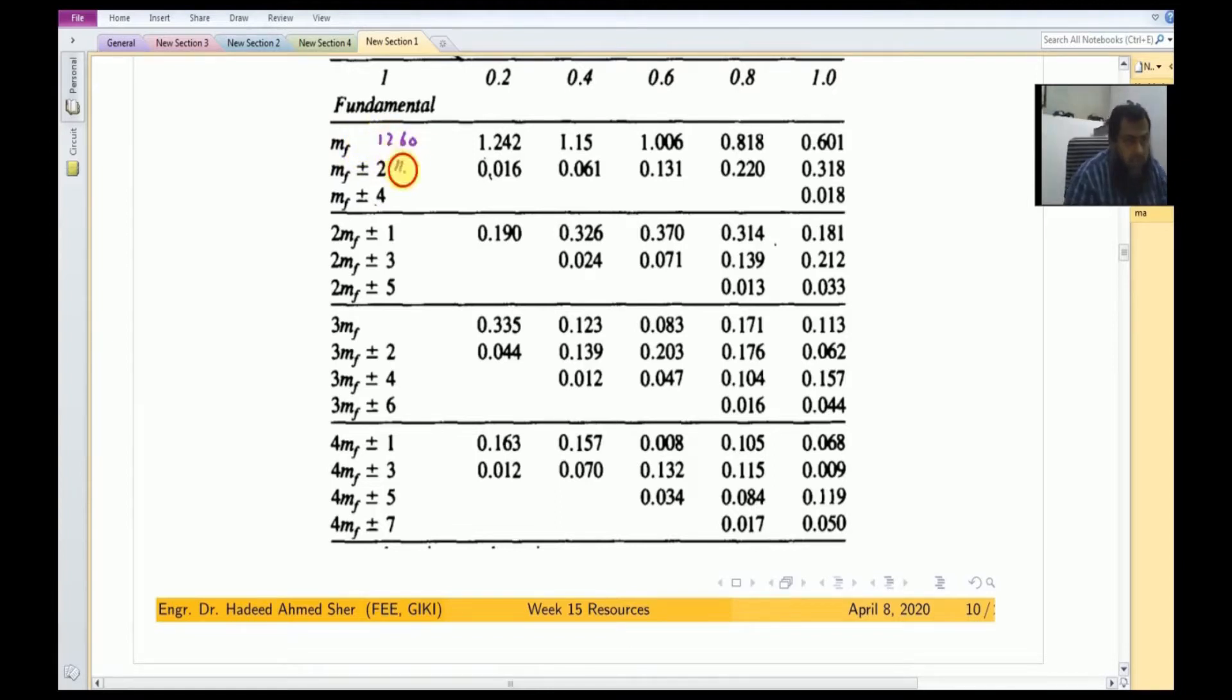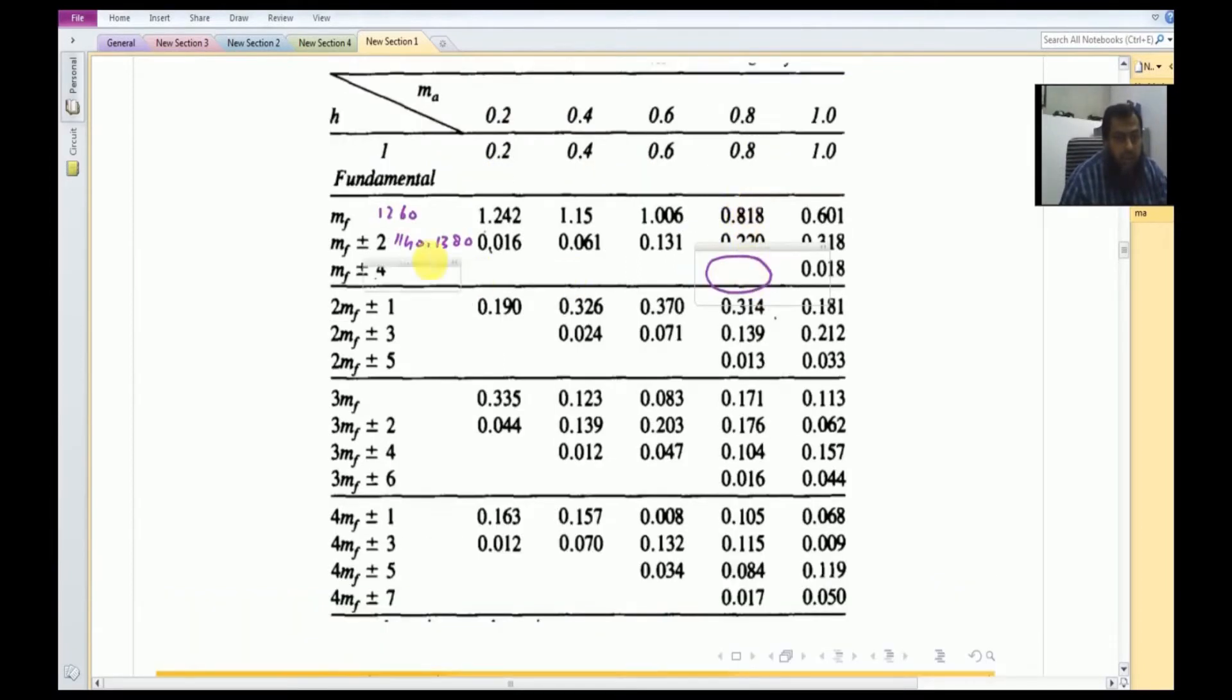You should notice here that we do not have any harmonic content for MA equal to 0.8 at this MF equal to 21. So let us simulate this one.